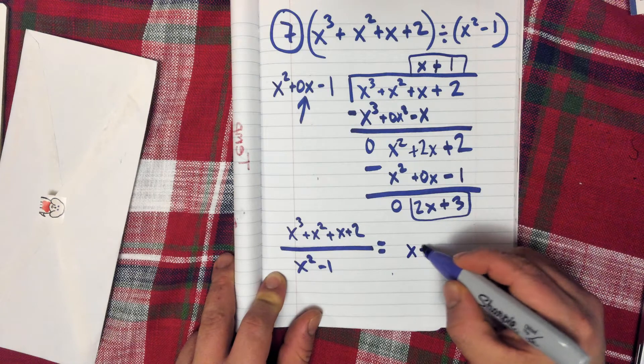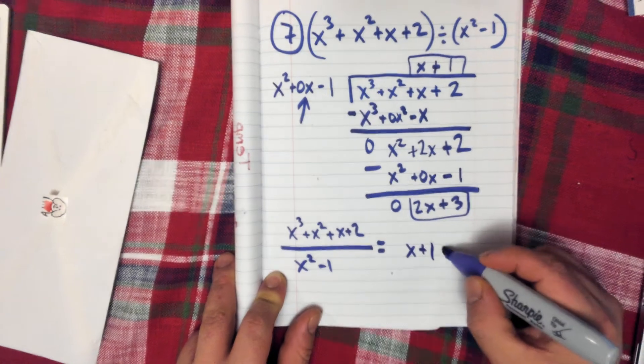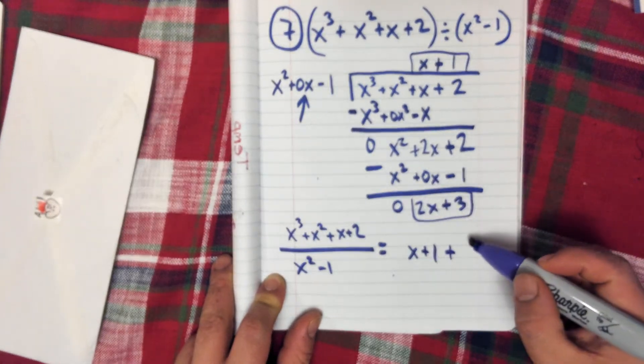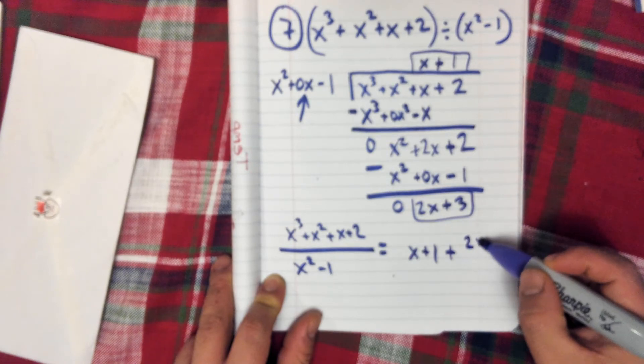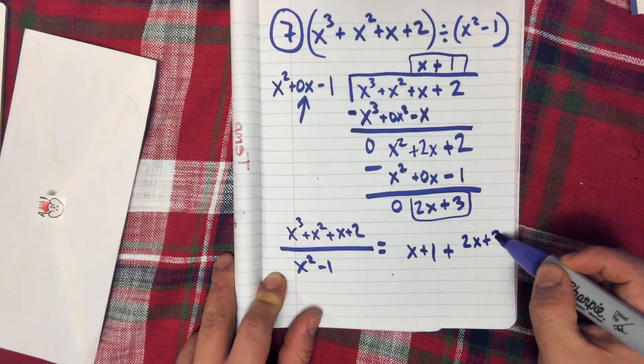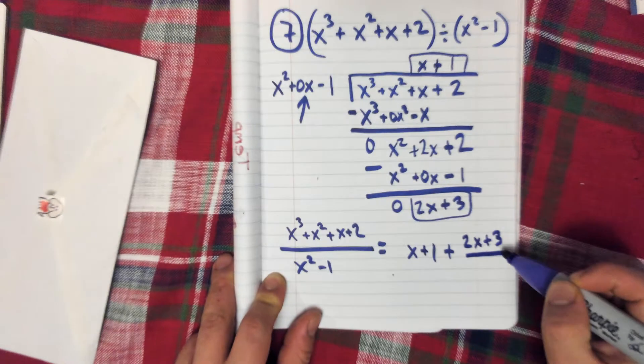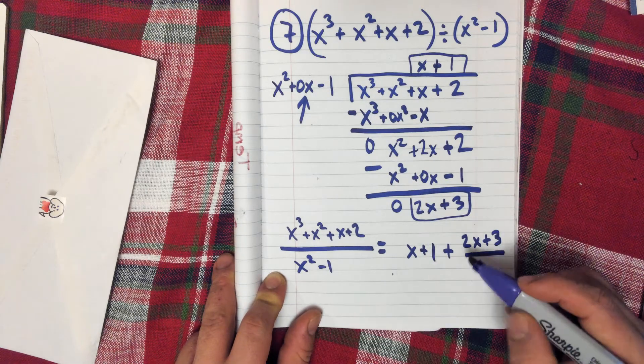x plus 1 plus the remainder over what you were dividing by, x squared minus 1.